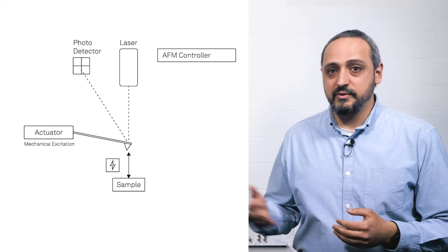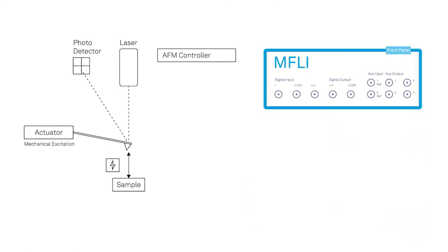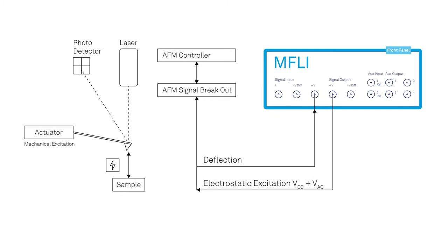To enable the KPFM methods on this Nanosurf Flex AFM, we connect a Zurich Instruments Lock-in Amplifier. The workflow is very similar for most microscopes. Typically, a signal breakout board is needed for easy access to signals like the cantilever's vertical deflection signal. It also enables the Lock-in Amplifier to drive AC electrical excitation signal and DC bias voltage of the tip or the sample.